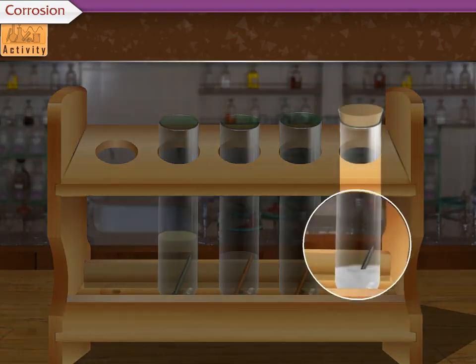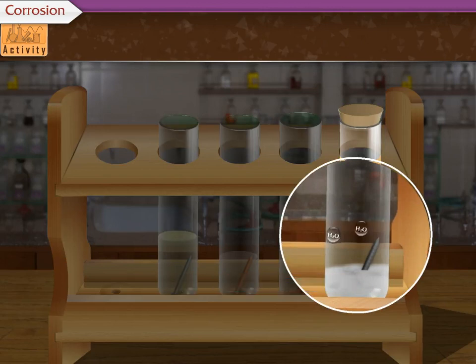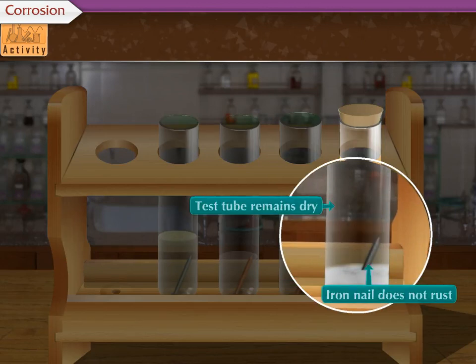In the fourth test tube, the anhydrous calcium chloride absorbs the moisture present in the air. Due to this, the test tube remains dry and the nail does not get rusted.